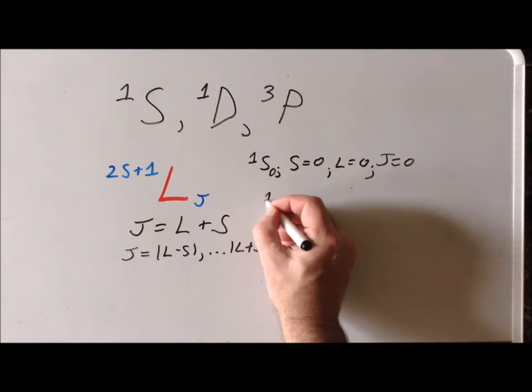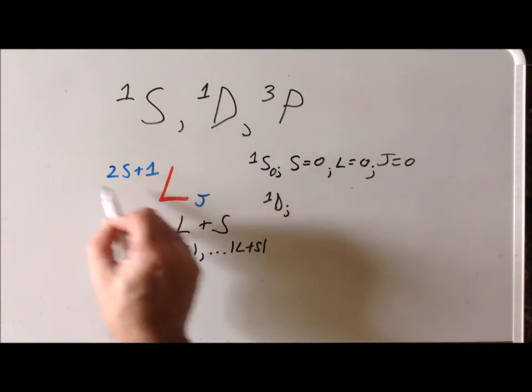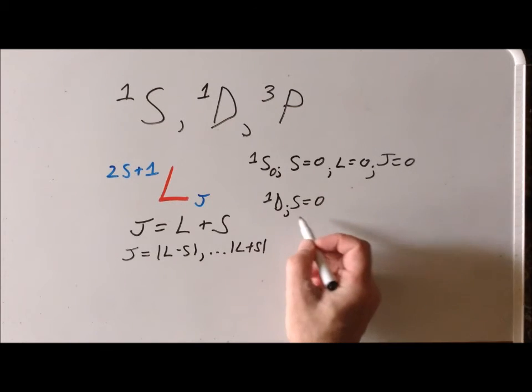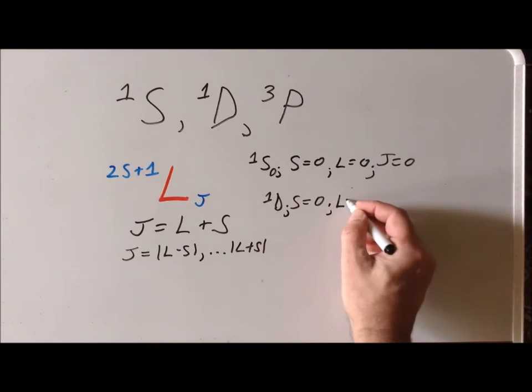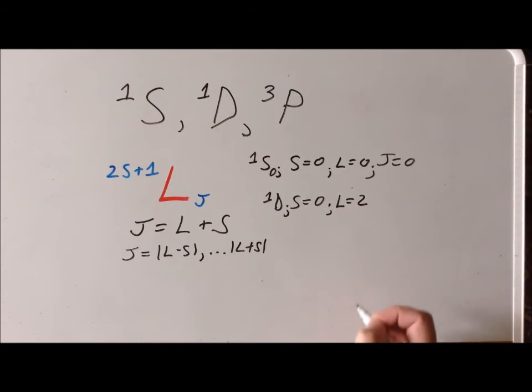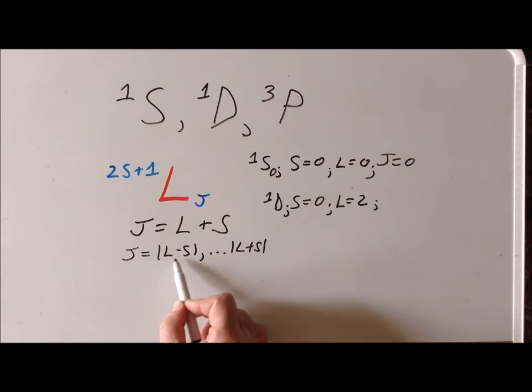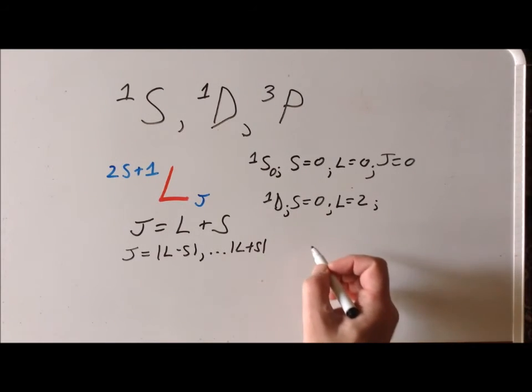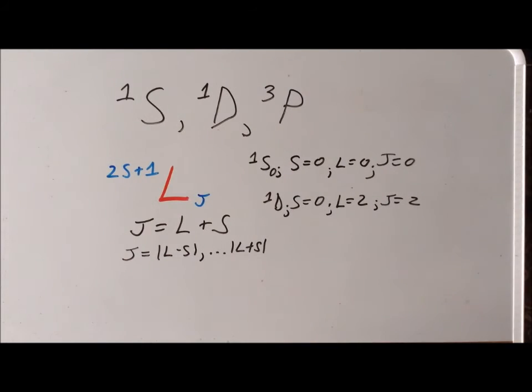In the case of singlet D, because the spin multiplicity is equal to 1, we work back that the total spin S has to be 0. That's what happens when you have a singlet. But now for L, this symbol is a D, which tells us the total orbital angular momentum is going to be equal to 2. So now we have the situation where we can go from L minus S, which is 2, up to 2. Again, because of the fact we have a singlet here, there's only one possible value of J, so it's going to be 0 plus 2 equals 2. So our total symbol would be singlet D with the subscript 2.